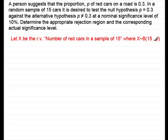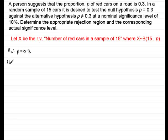Under the null hypothesis, H0 states that the proportion we're testing is 0.3, so we write p=0.3. The alternative hypothesis in this example is that it is not 0.3, so H1: p≠0.3.